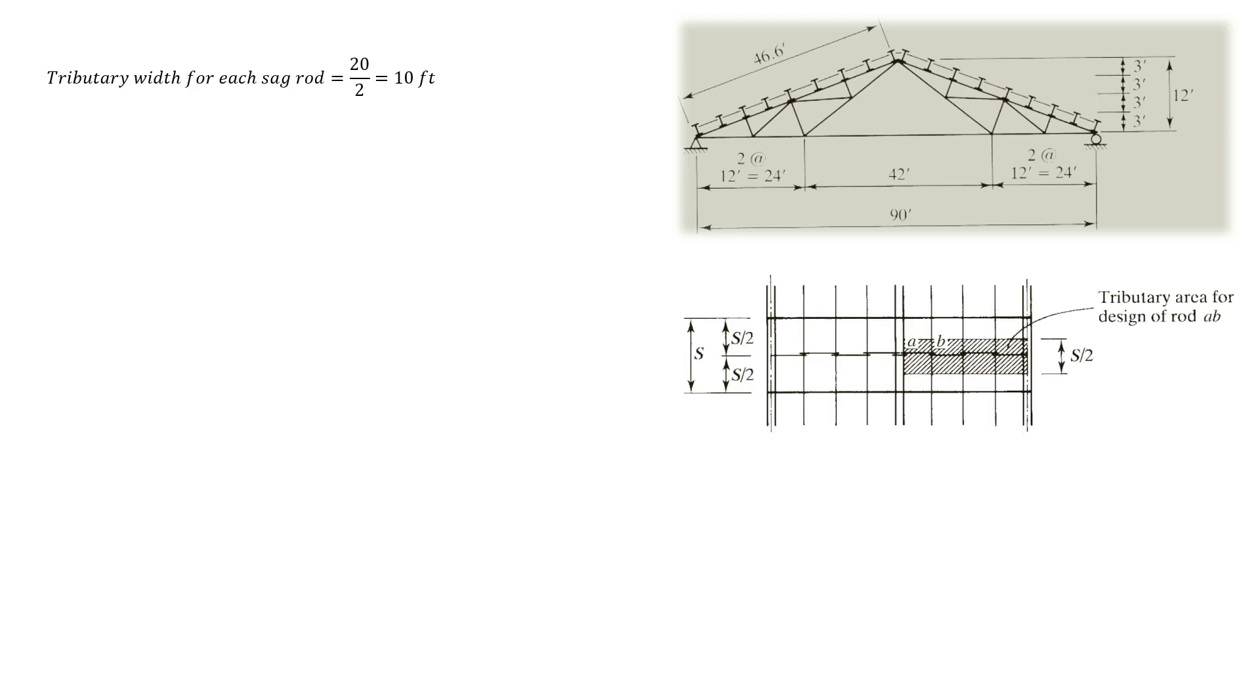The tributary width for each sag rod is equal to the distance between trusses divided by 2. The tributary area for the deck and built-up roof is equal to 466 square feet. The dead load coming from the deck and the roof is 3262 pounds. The weight of the purlins in the tributary width is 1080 pounds. The total dead load is then 4342 pounds.